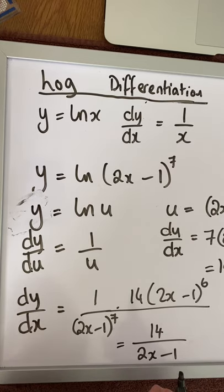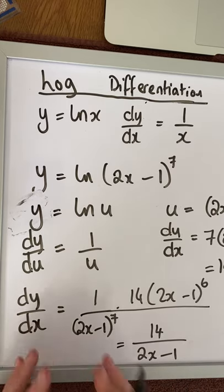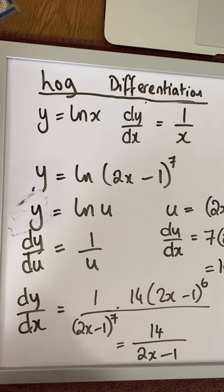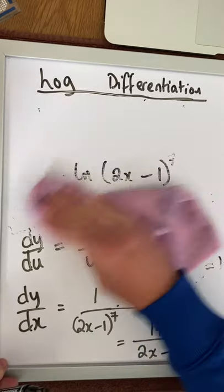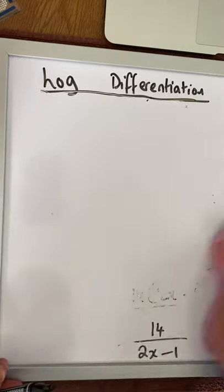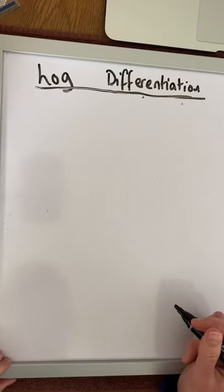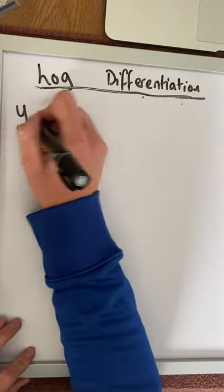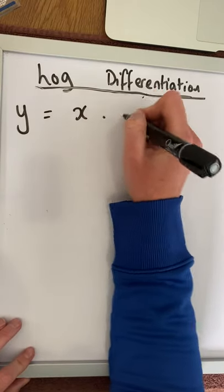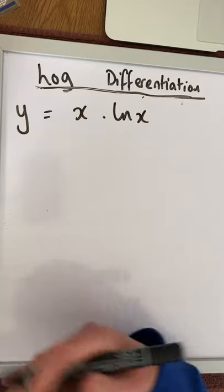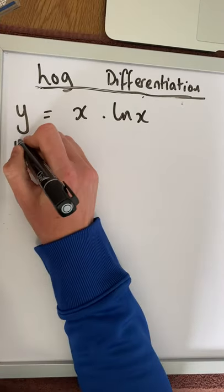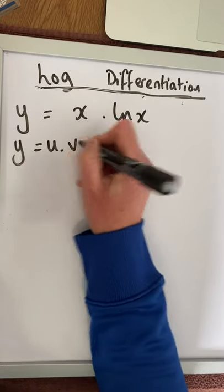Again, you have to look at examples where the log rules come into contact with the product rule, quotient rule, and chain rule. I'll look at one example where we have to use the product rule. So if we have a function y is equal to x times by the natural log of x, we can't simplify this, so we have to use the product rule.